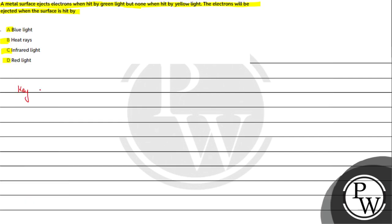For this question, the key concept we will be using is Einstein's photoelectric equation. According to Einstein's photoelectric equation, the energy incident on a photosensitive surface — that is hν, the energy of the photon — is utilized for the work function and for providing the maximum kinetic energy to the electron.